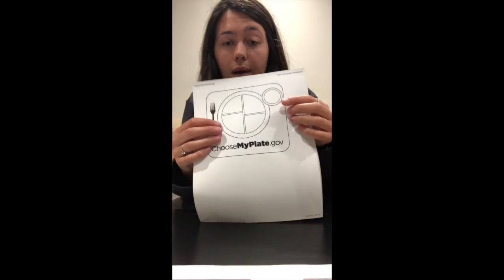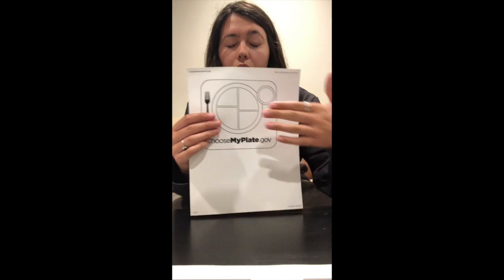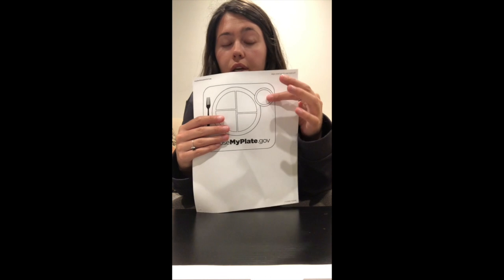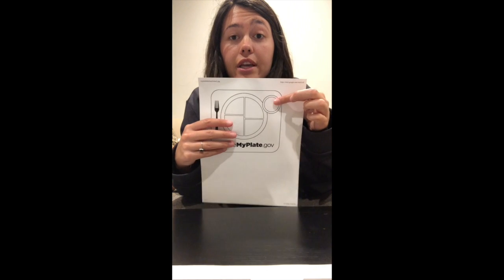Okay, so let's go ahead and start by explaining what the different parts mean. So this cup here, this is for dairy. So this is the amount of dairy that we're supposed to have really with our meals.